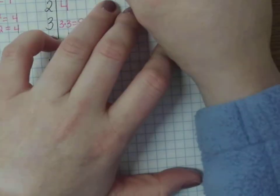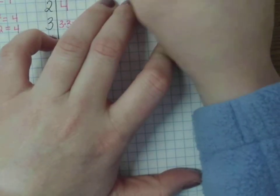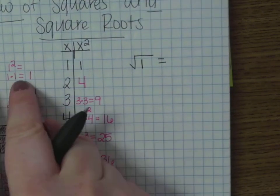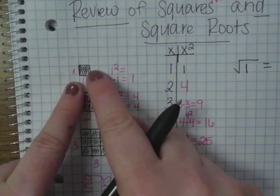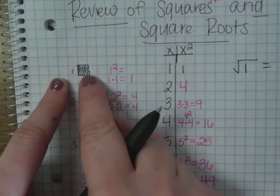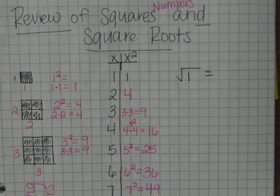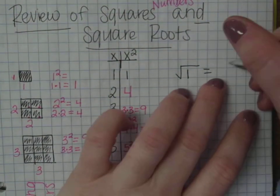So, if I want to know the square root of 1, that means I have one square here, and I want to find out what the length and the two sides were. So, the square root of 1 would just be 1.